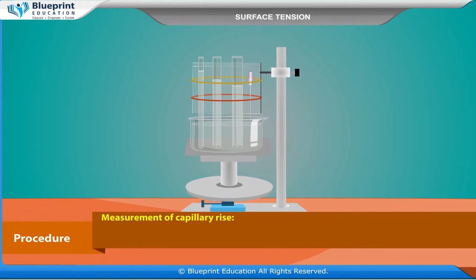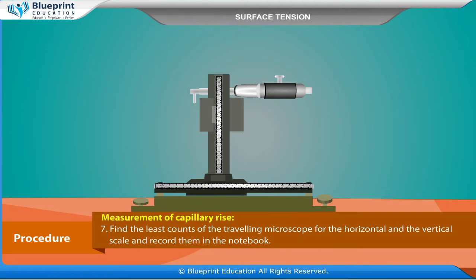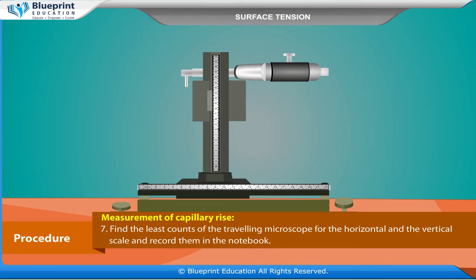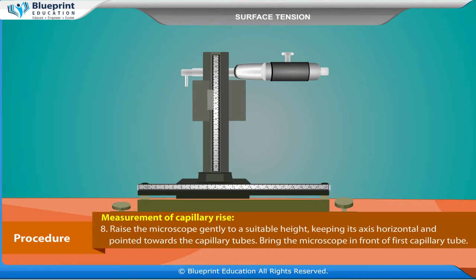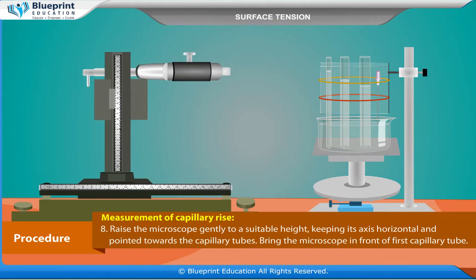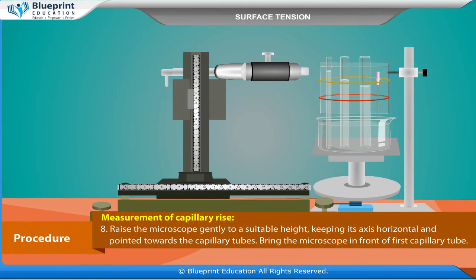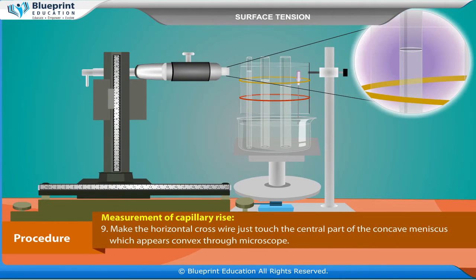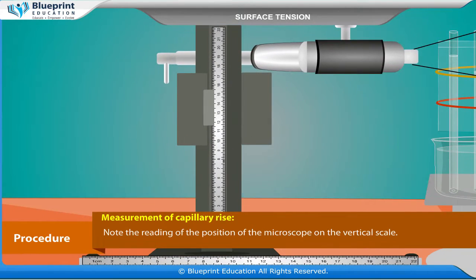Measurement of capillary rise. Find the least counts of the travelling microscope for the horizontal and vertical scale and record them in the notebook. Raise the microscope gently to a suitable height keeping its axis horizontal and pointed towards the capillary tubes. Bring the microscope in front of the first capillary tube. Make the horizontal cross wire just touch the central part of the concave meniscus, which appears convex through the microscope. Note the reading of the position of the microscope on the vertical scale.